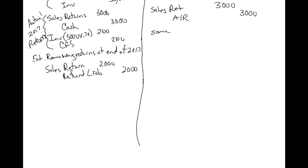Depending on the book you're using, the level of detail may vary — the Spiceland book does a better job covering both credit and cash sales. For the cost portion, we'll have inventory — estimated returns — and cost of goods sold for $1,400. Sales returns is a contra revenue account, so we're truing everything up in the period of the sale, so all cost of goods sold and net sales will be reflected in the year of sale.